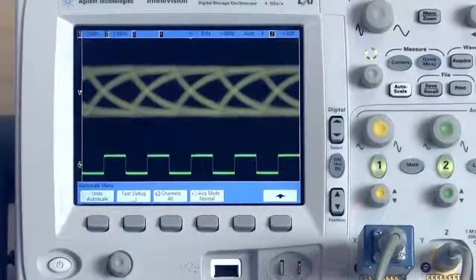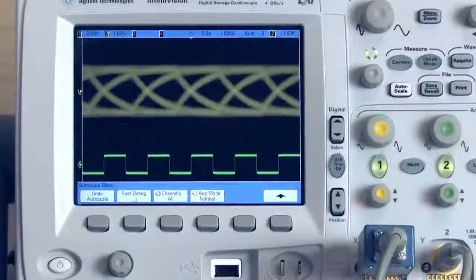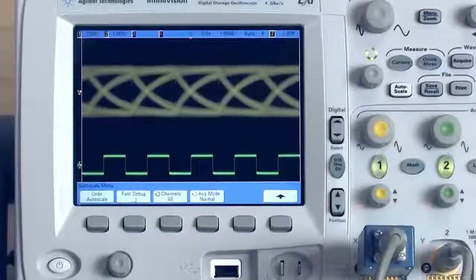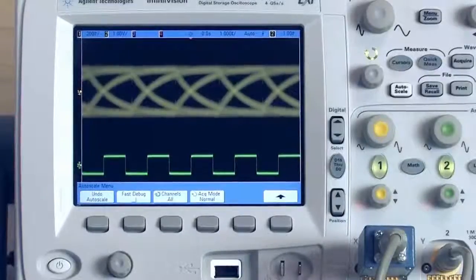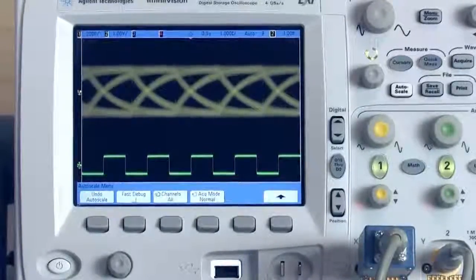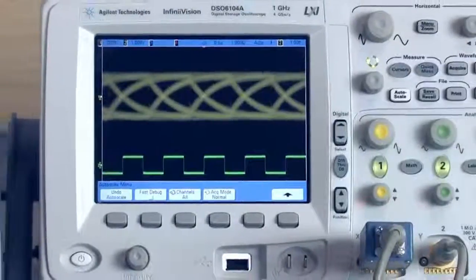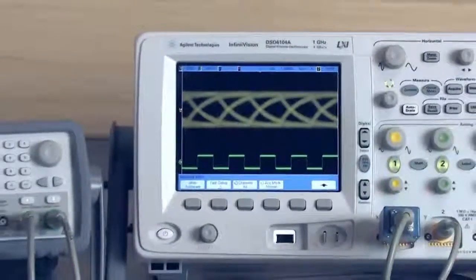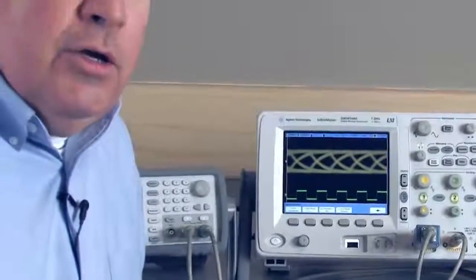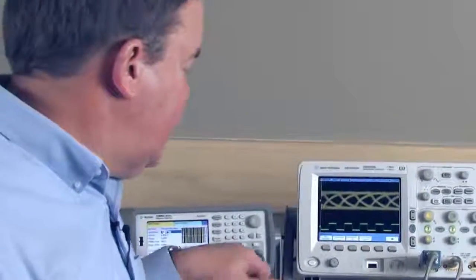This is one way to use the PRBS signal that is generating a seemingly, an apparently random signal. However, this signal isn't actually random. And you can synchronize to this very long signal, which can be anywhere from pseudo N3 to pseudo N32 in length. You can synchronize to that using the sync pulse out of the generator. That leads you on to many more complex measurements that you can make using PRBS.